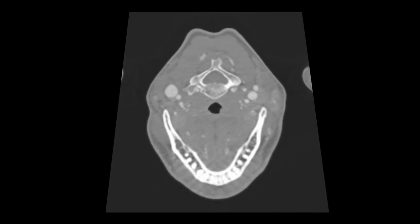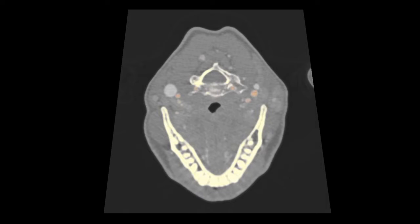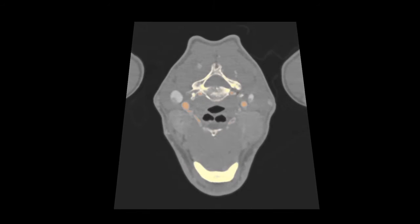The trachea appears as a black hole over the jawbone. Above it is the cervical vertebra. The arteries appear as red dots on both the left and right sides.